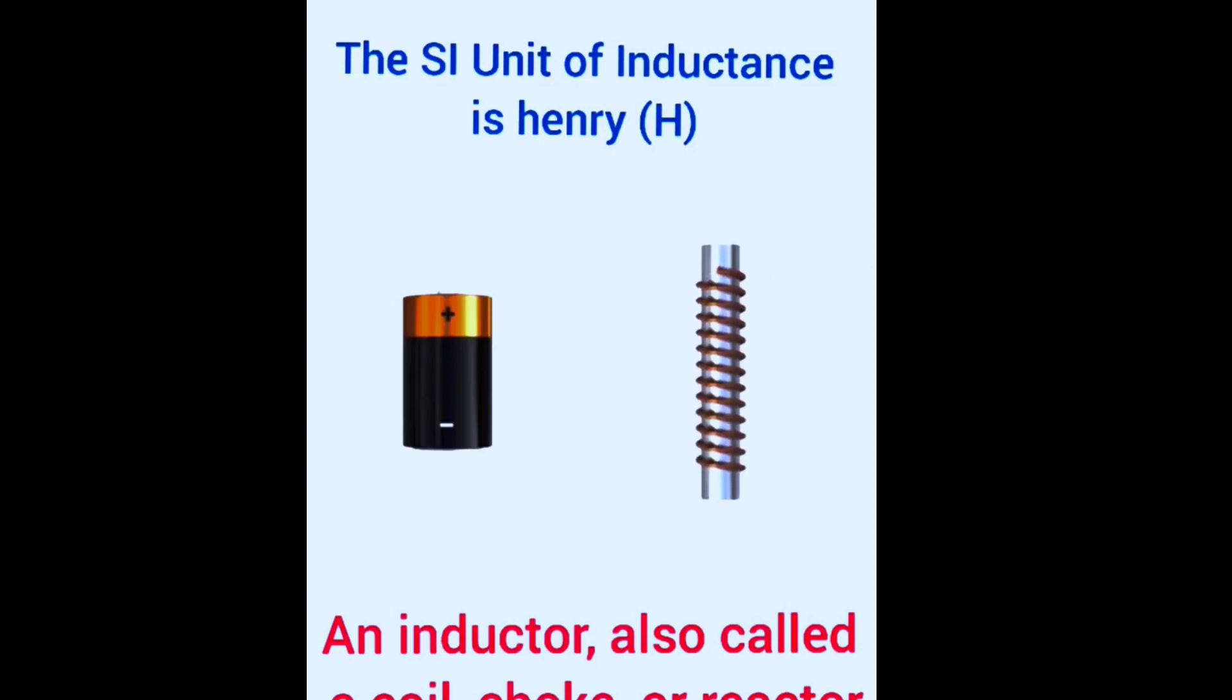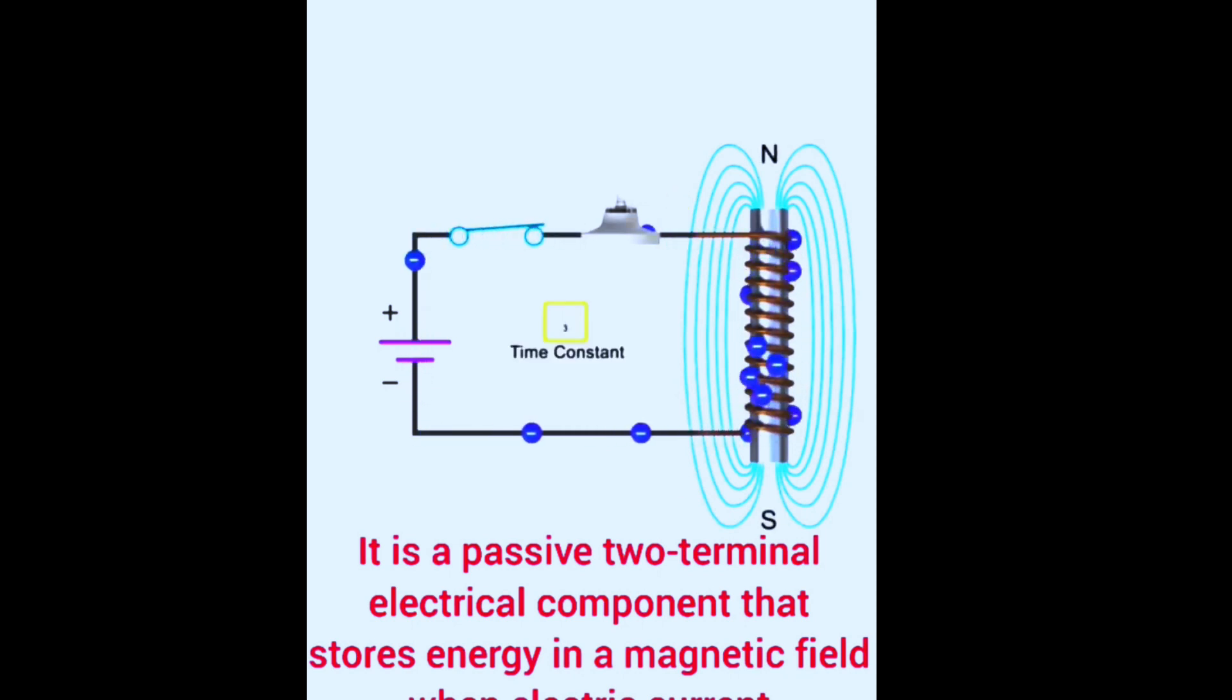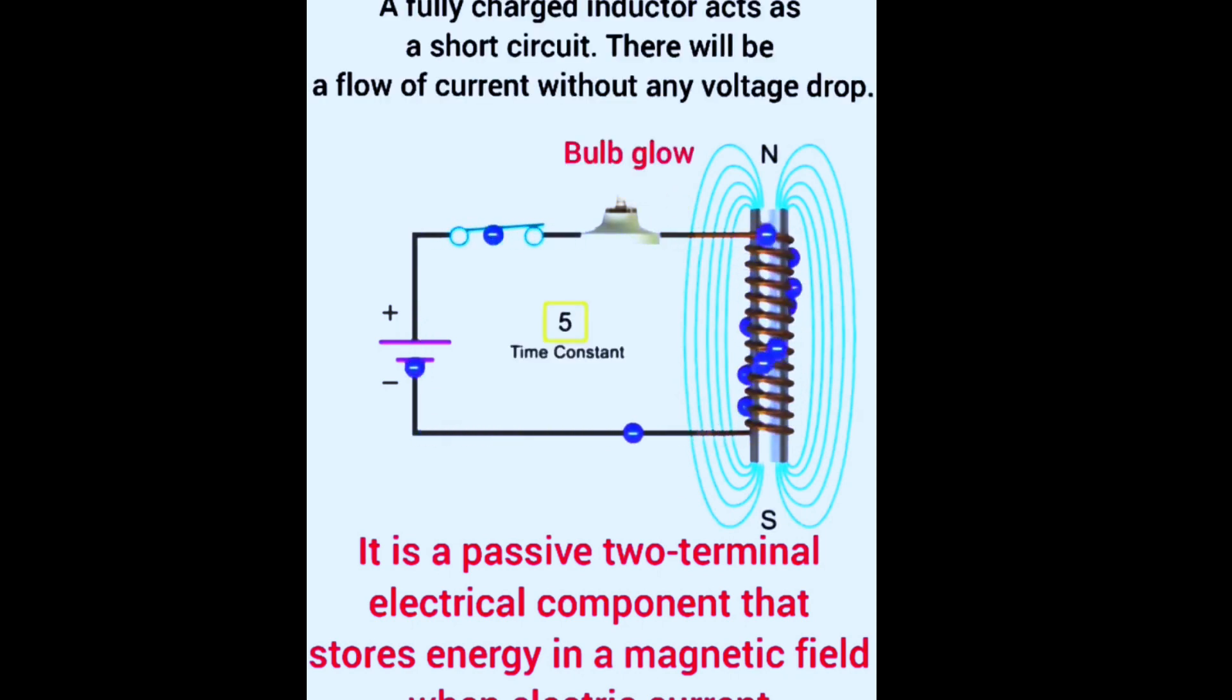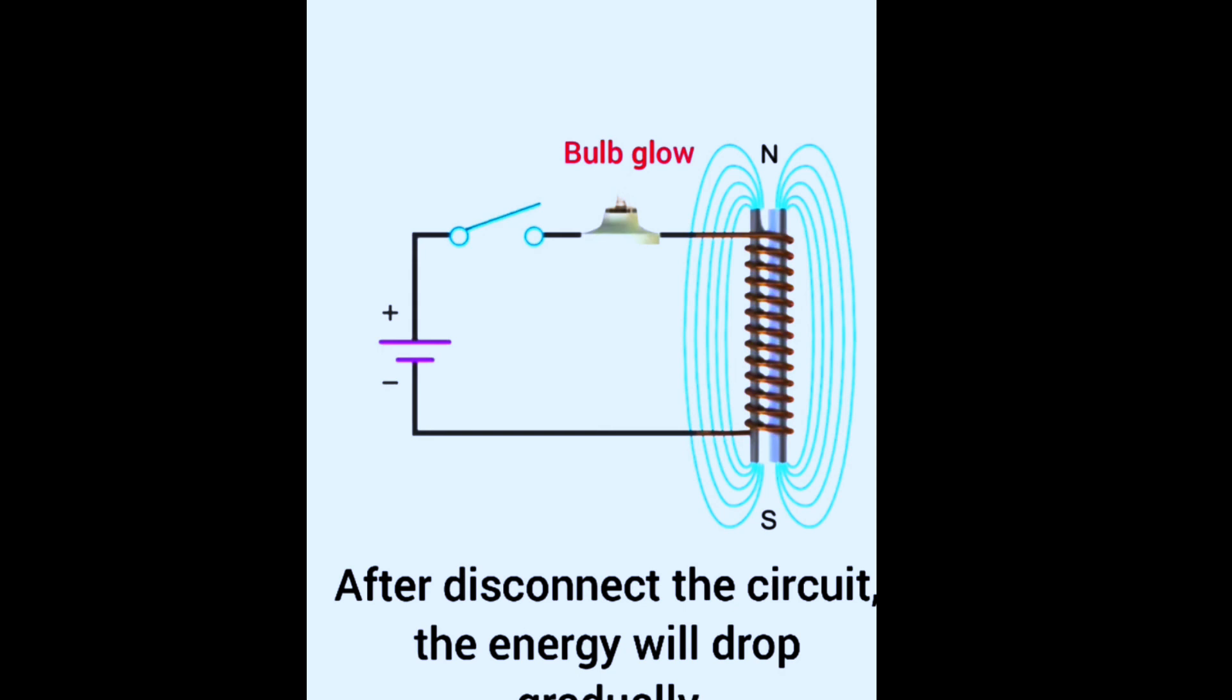When electric current flows through it, an inductor typically consists of an insulated wire wound into a coil. An inductor has the function of developing electromotive force in the direction that reduces fluctuations when a fluctuating current flows.